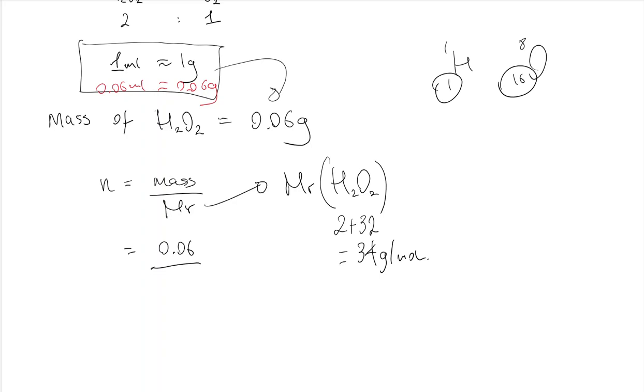Don't worry too much about that chemistry, we just wanted that end result. So dividing by that 34, I get the number of moles of hydrogen peroxide: 0.0018 moles of hydrogen peroxide.